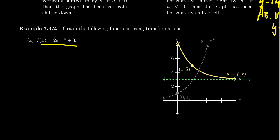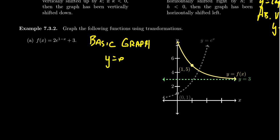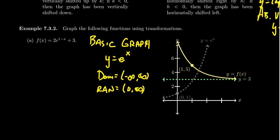Consider the function f(x) = 2 times e to the (1 minus x) plus 3. To graph this via transformations, the basic graph is y equals e to the x. Its domain is all real numbers, since there's no number we can't evaluate as a power of e. The range of the natural exponential is restricted — the graph is asymptotic to the x-axis, never touching or crossing it. Its range is 0 to infinity.